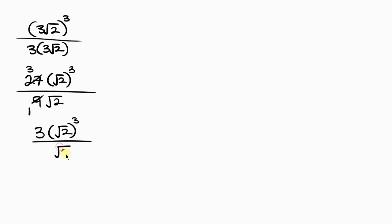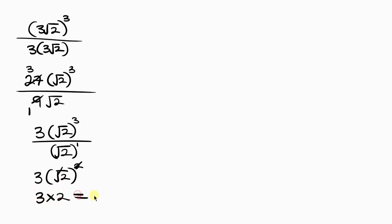Simplifying: 27 over 9 gives 3, so we have 3 times root 2 cubed all over root 2. Applying the law of indices, we take one base and subtract the powers: 3 minus 1 is 2. The square cancels with the square root, leaving 3 times 2, which gives 6. This matches the right-hand side, so x equals 3 root 2 is confirmed.